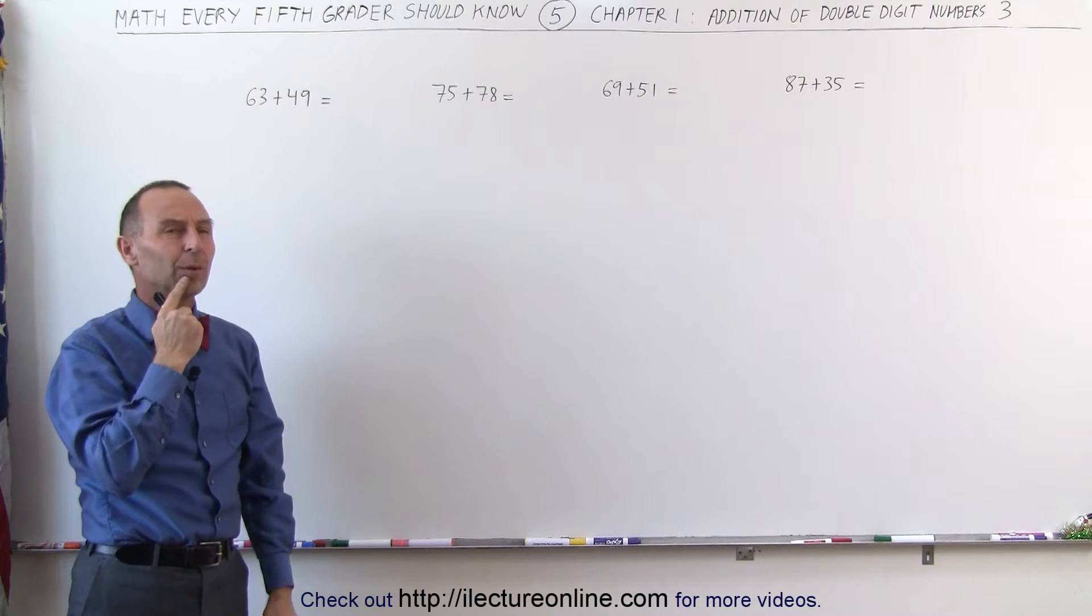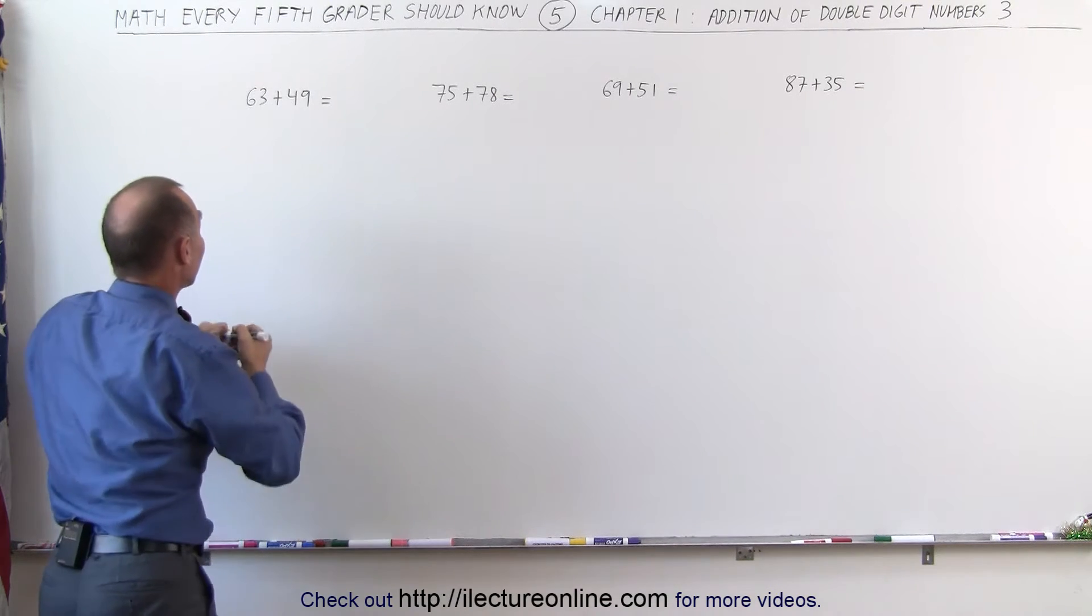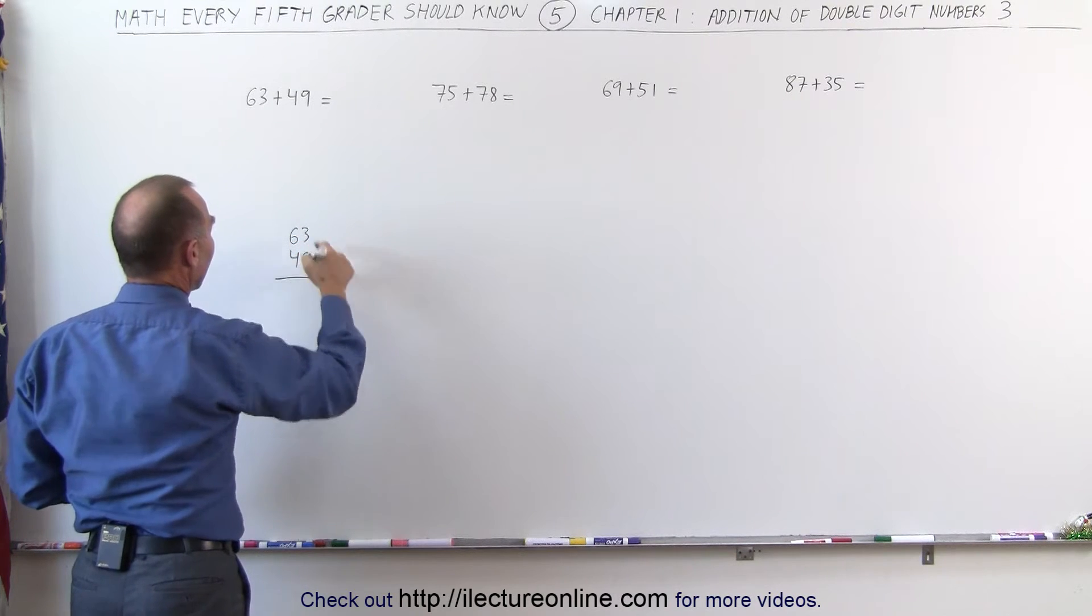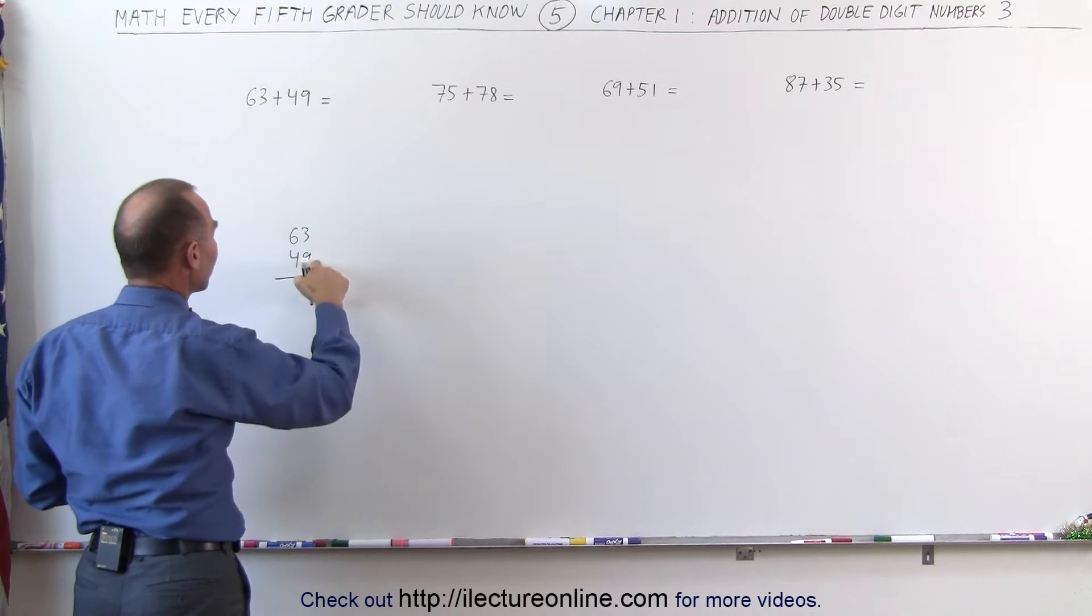Now you may say, why not just work it just like any other problem? I simply write the two numbers down. And I add the last two numbers together. 3 plus 9 is 12.